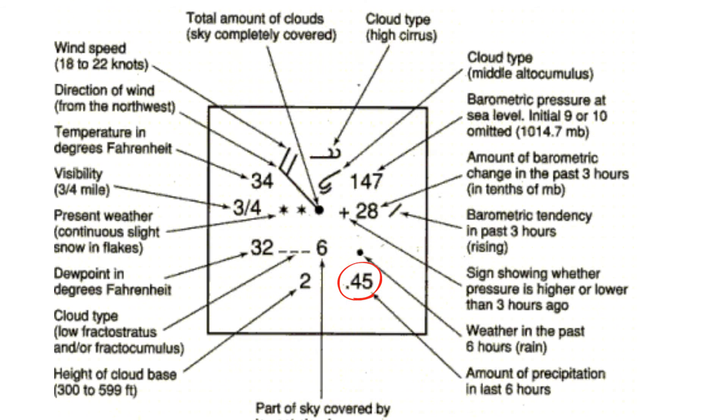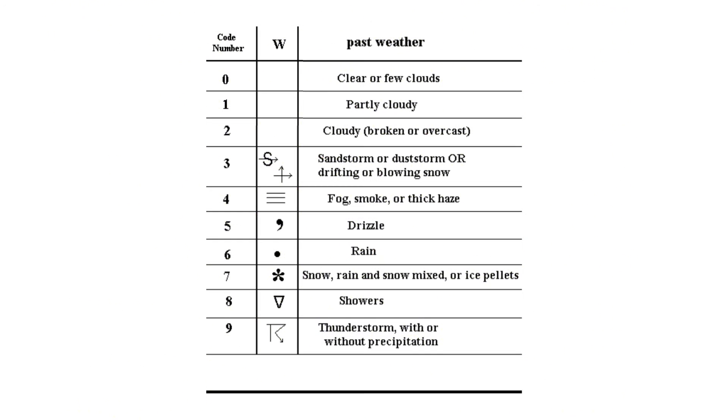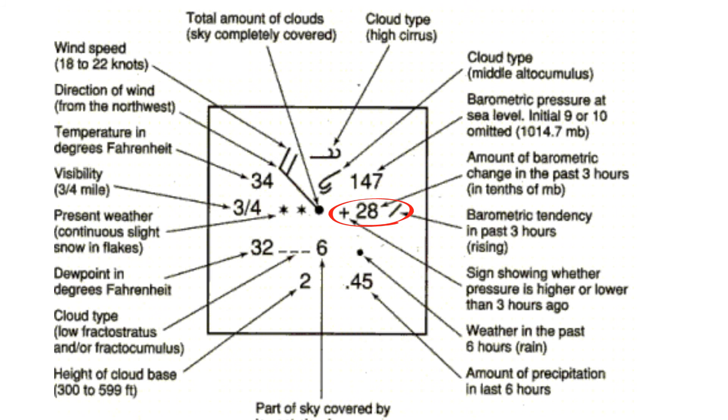Next let's move on to the amount of precipitation in the last six hours. This is measured in inches. You have the weather in the past six hours. You would use a chart similar to this to figure out what the weather is like.